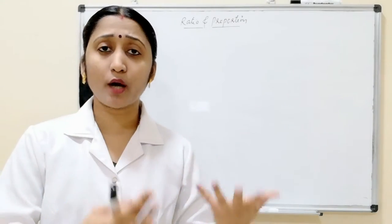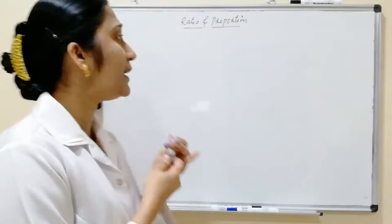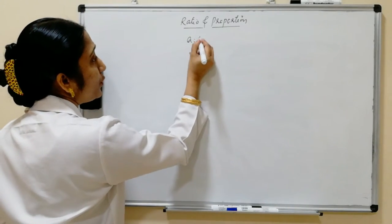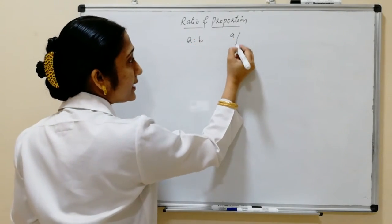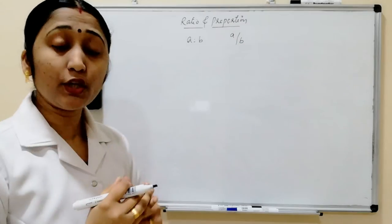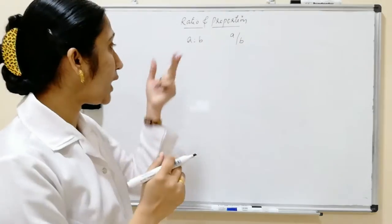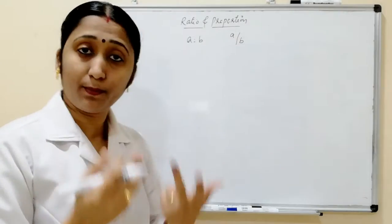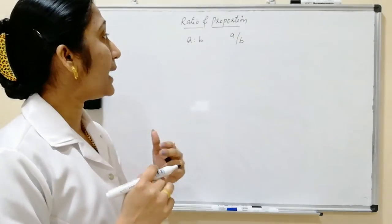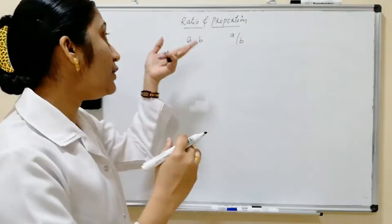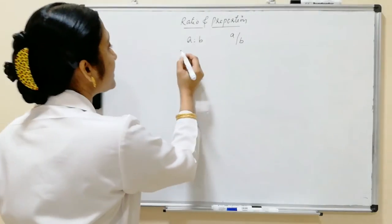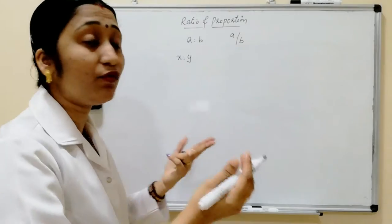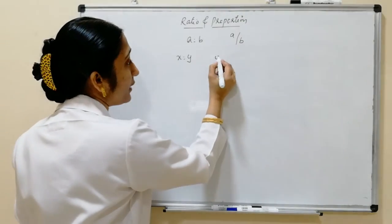If any two quantities are in ratio, that means we can write it as A is to B, or otherwise we can write it as A by B. From that, we can write the inverse of this ratio: if X is to Y is a ratio, the inverse ratio is nothing but Y is to X.